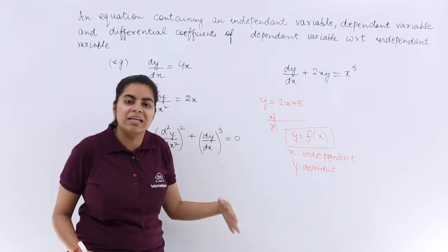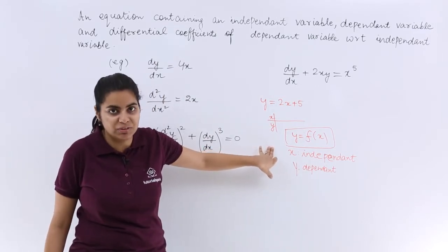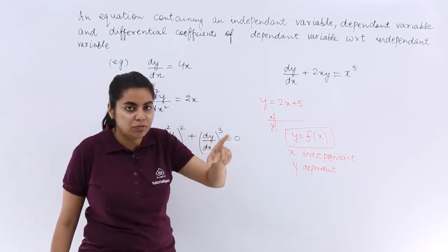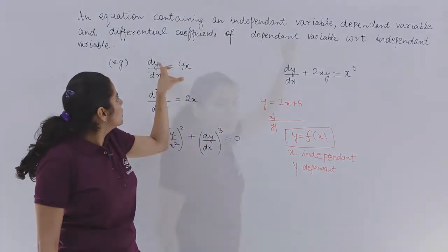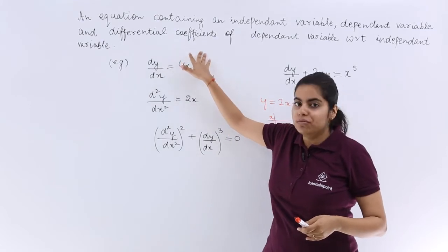So x and y being independent and dependent variables in this case respectively. Now again let's move to the definition part. It says it contains independent variable, dependent variable, and differential coefficients.